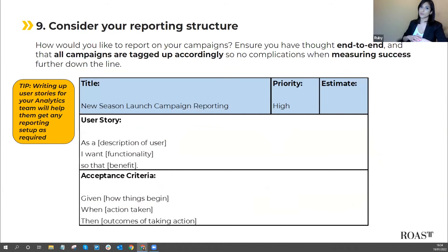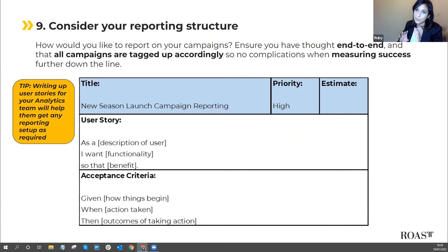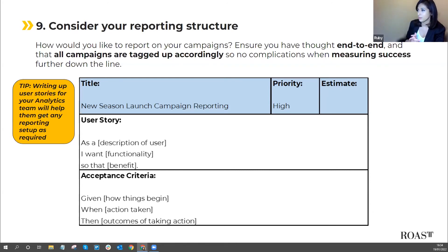Step nine is considering your reporting structures. Think everything end to end when launching new campaigns — always think through to how you're going to report on these campaigns afterwards. Will you report on campaign performance by segment or on the overall campaign itself? Preparing a story of your requirements is an effective way to communicate to your analytics team what you need to measure, so they can build the best reporting suite for you.